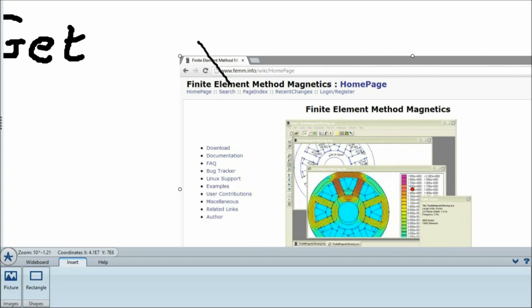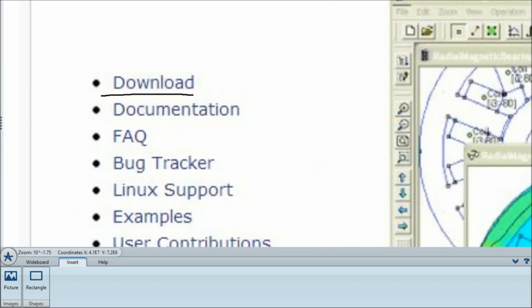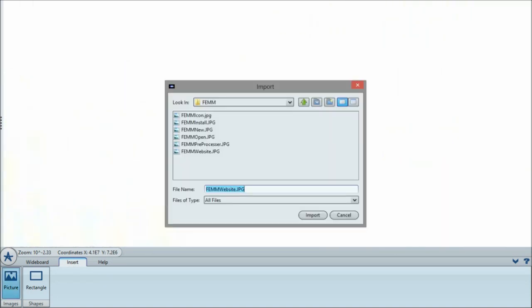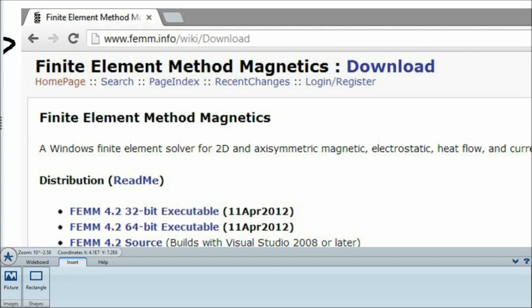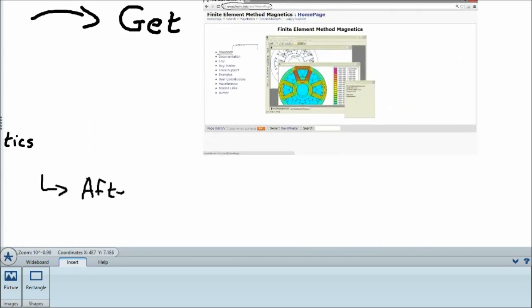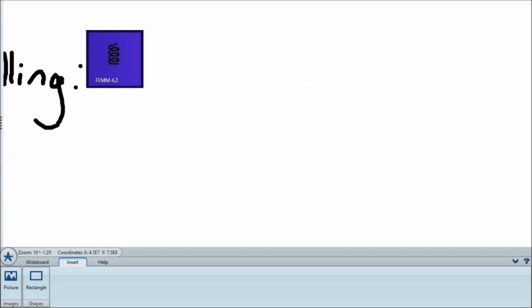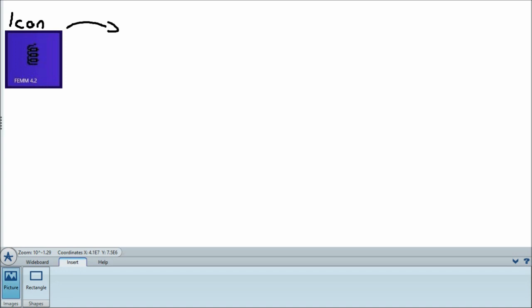We download FEMM's installer from its website, then proceed to the download page to choose which installer to select depending on our computer. We then run that installer and make the necessary selections until it is installed on our machines. After it is installed, we open up the application.